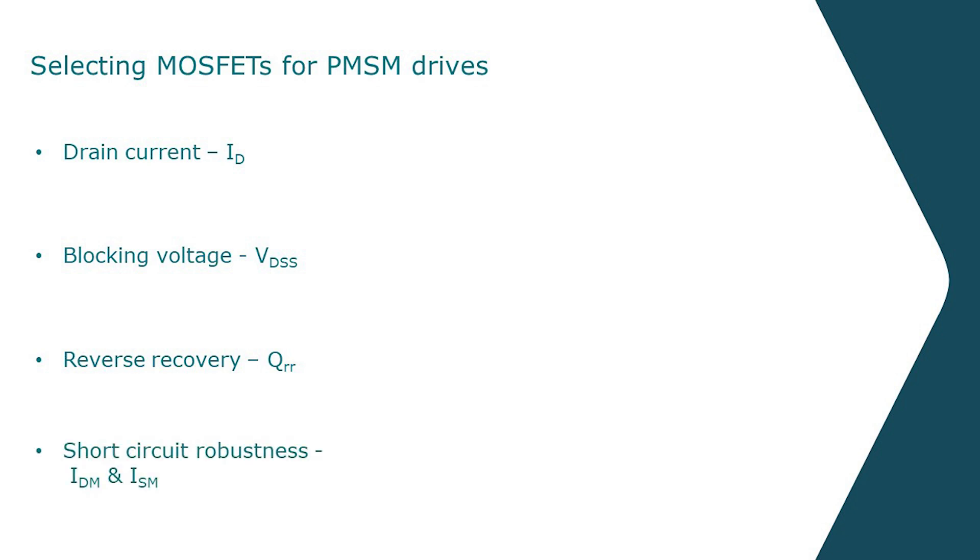Short circuit robustness is important for instances where a short circuit appears in the motor phase or due to failure of the MOSFET of the other MOSFET in the inverter leg. In these cases a large current can rush through the FET for a short period of time until the short circuit protection reacts.